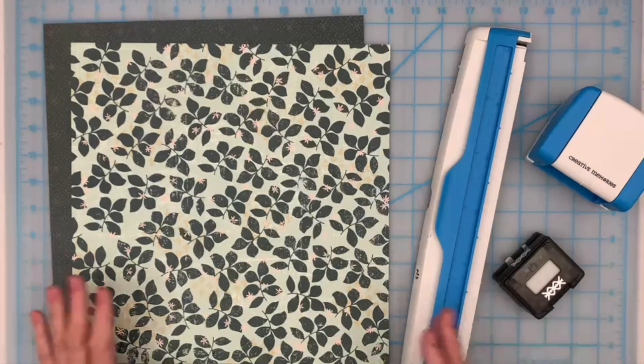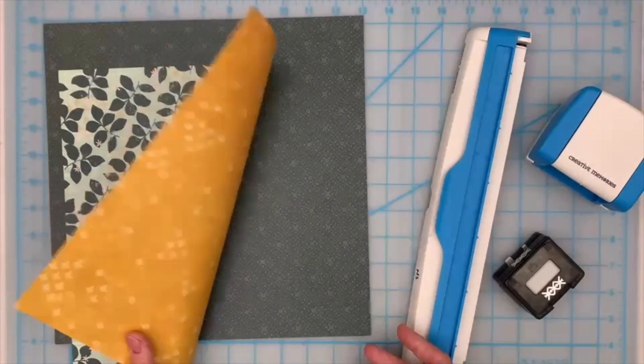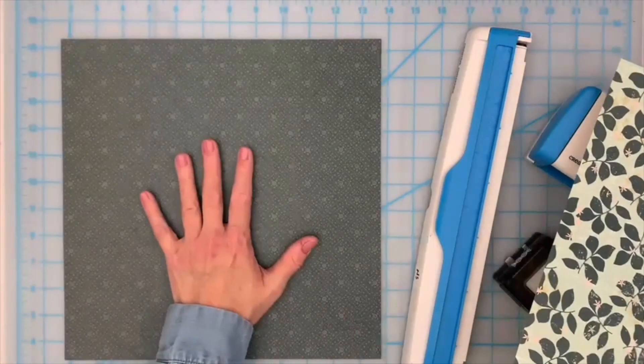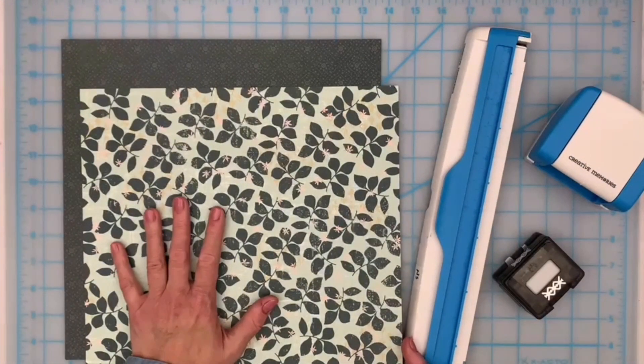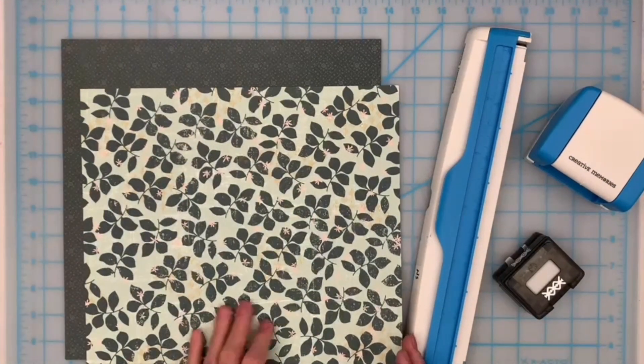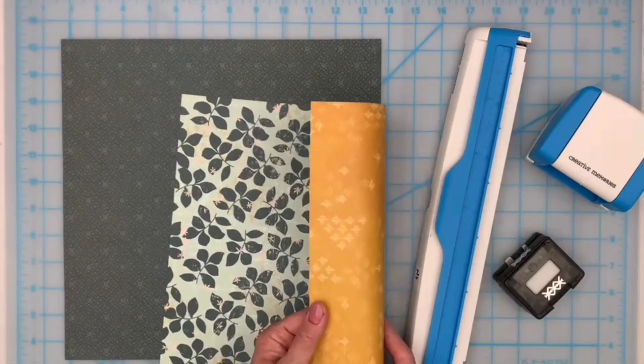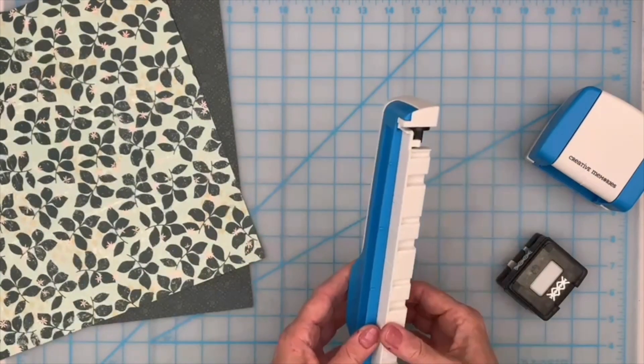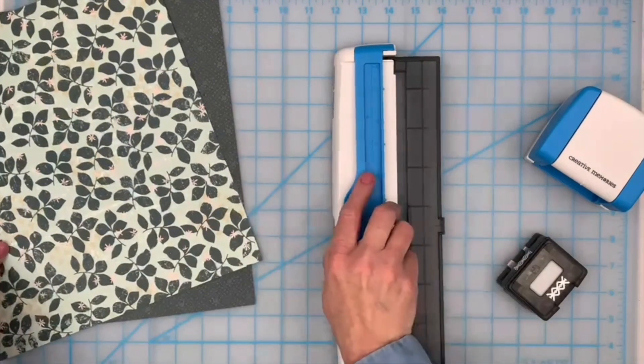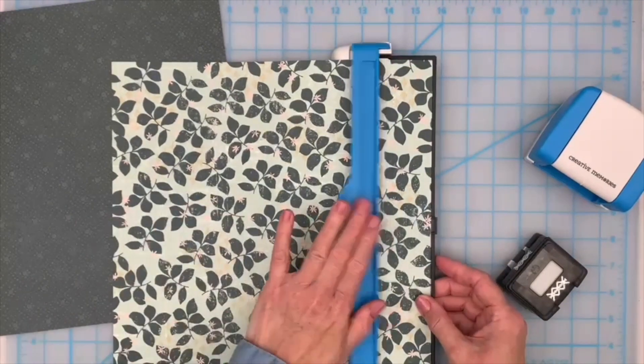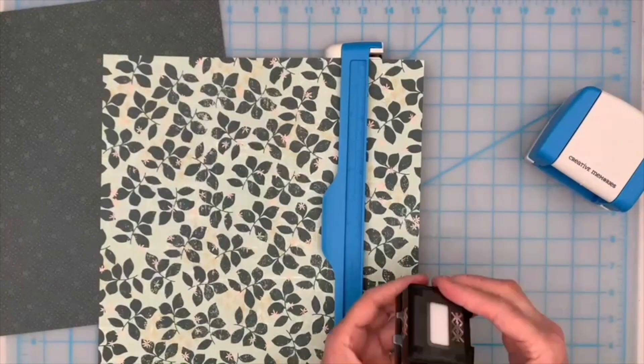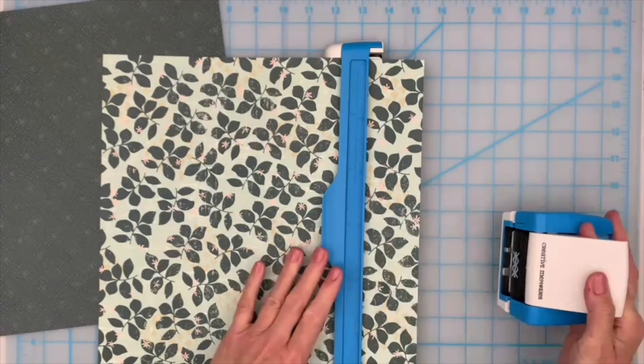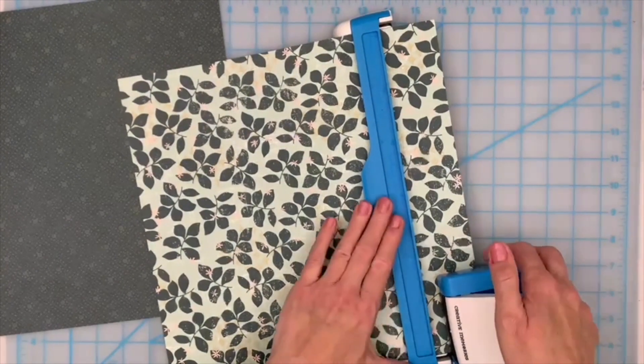First, you're going to want to decide which is going to be your base paper and which is going to be the paper that you use as your accents. I'm going to use this multi-leaf pattern as my base paper and the back side as my accent. To get started, we're going to punch two borders. I'm going to slide in my paper, insert my mirrored triangles border maker cartridge into the punch mechanism, and punch the entire length of the paper.